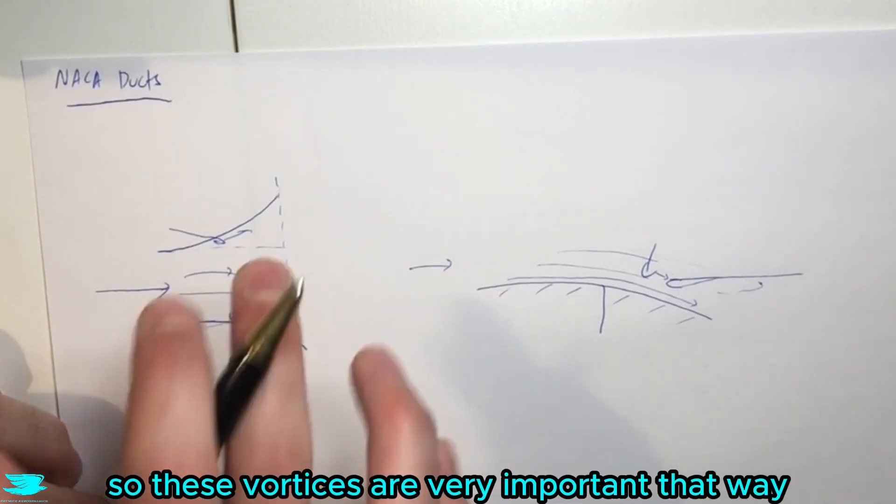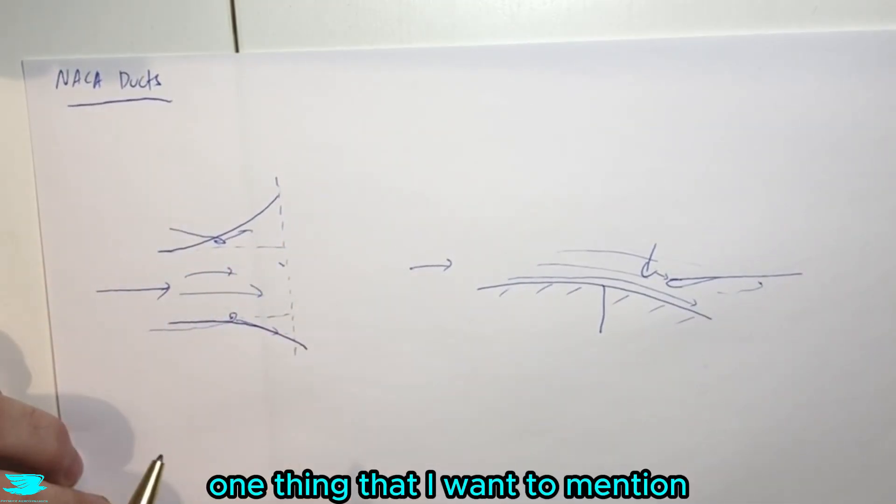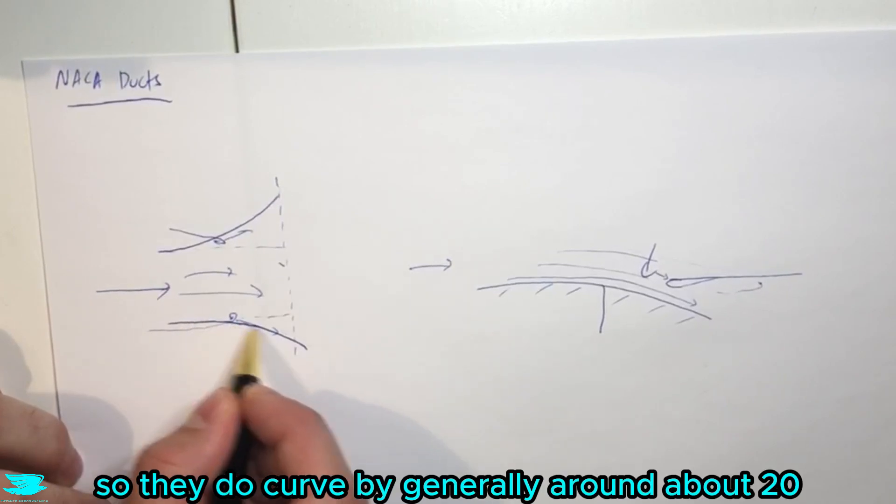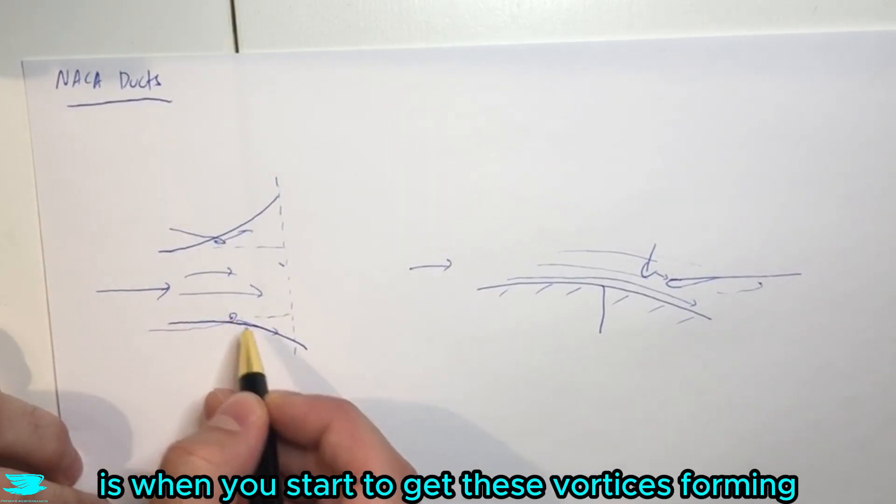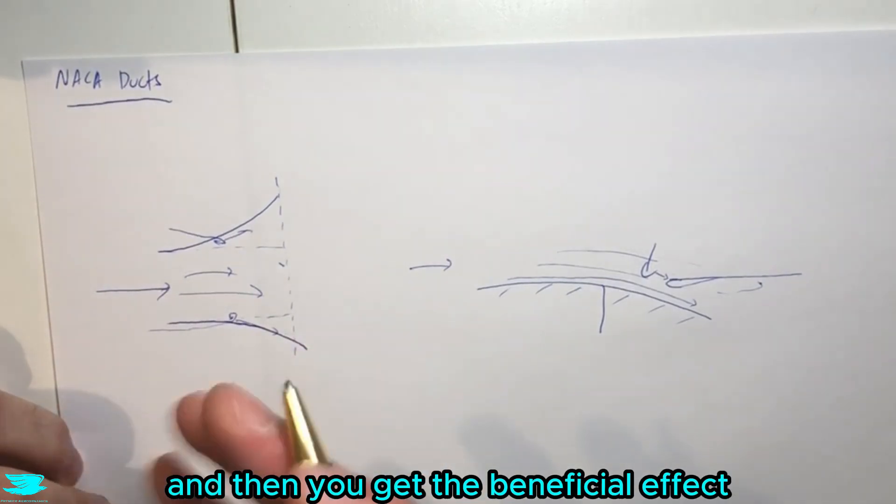So these vortices are very important that way. One thing that I want to mention is the angle of these walls. So they do curve, but generally around about 20-30 degrees or so is when you'll start to get these vortices forming, and then you get that beneficial effect.